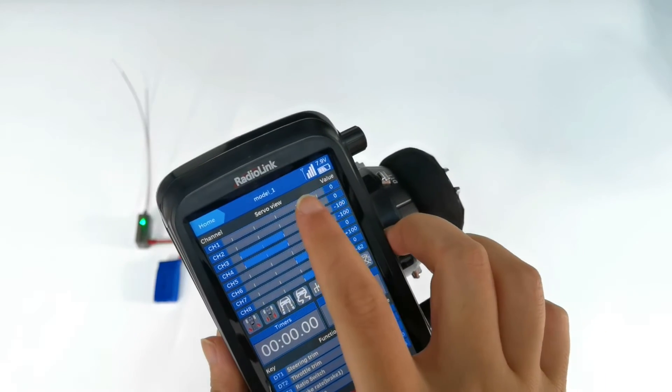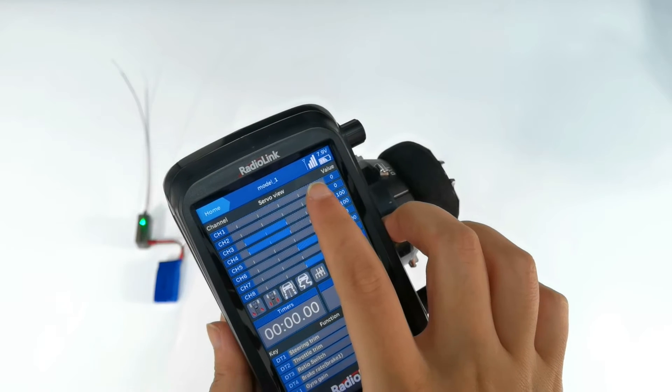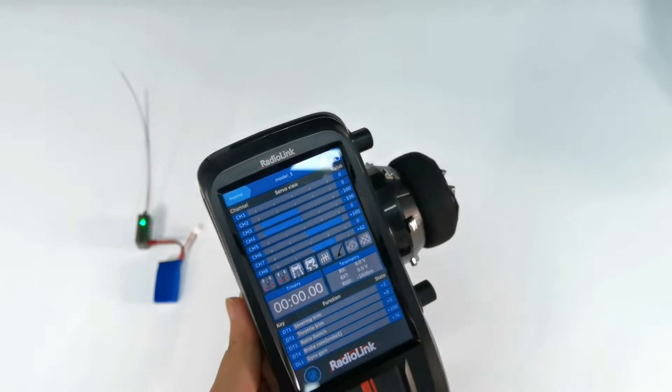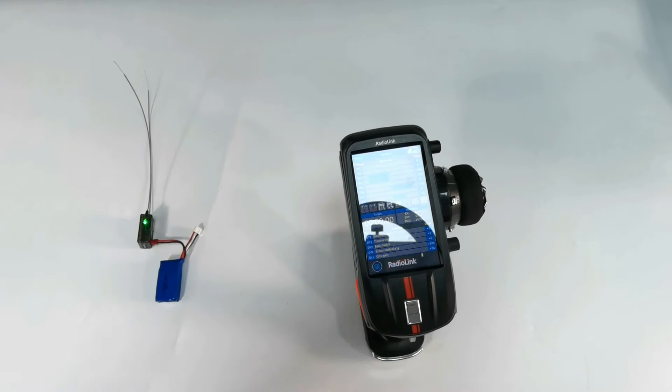The solid light at the receiver indicates the binding is complete. The signal tower on the screen of the transmitter shows that binding is successful. If binding fails, the LED of the receiver will keep flashing slowly. Repeat the binding steps.